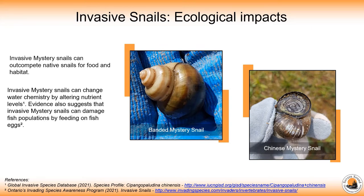Each species also has its own unique effects on the natural environment. The Chinese Mystery Snail can change the water chemistry of the water bodies it inhabits by altering nitrogen and phosphorus levels. This can have a negative impact on both the surrounding ecosystem and the native aquatic plants and wildlife that depend on those nutrients.